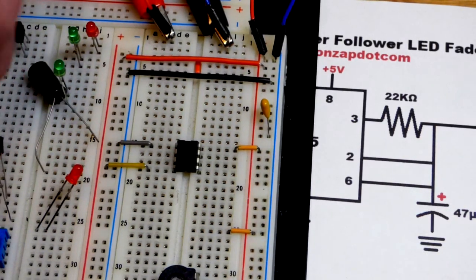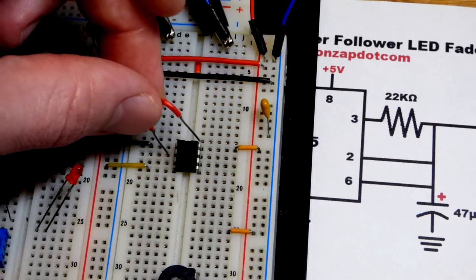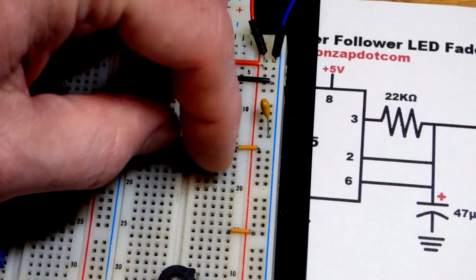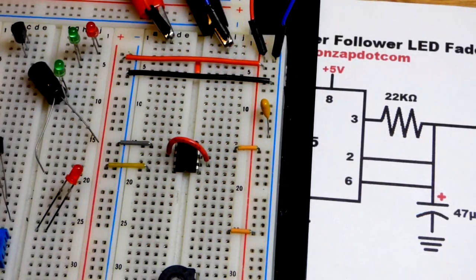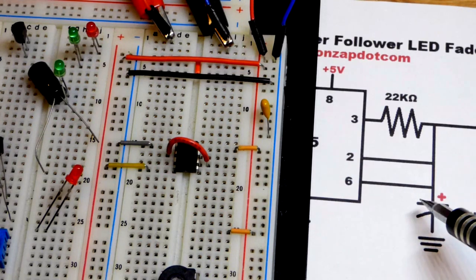You can see here pin number 2 and pin number 6 are directly connected together. Pin number 2 is the trigger pin, it's waiting for a relatively low signal, and then pin number 6 is the threshold pin, it's waiting for a relatively high signal.